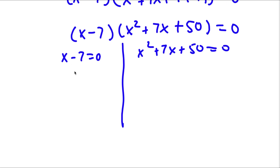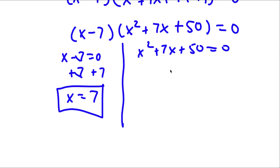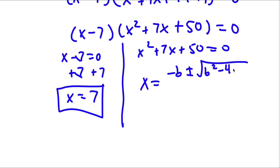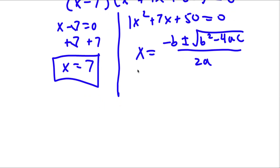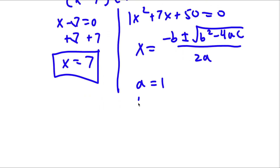For x minus 7 equals 0, I simply add 7 on both sides, giving x equals 7. For x squared plus 7x plus 50 equals 0, I'm going to use the quadratic formula, which is negative b plus or minus the square root of b squared minus 4ac over 2a. In this case, a equals 1, b equals 7, and c equals 50.